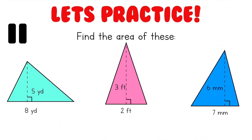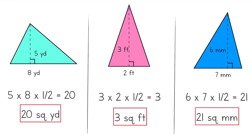Are you ready to try a few on your own? Try your best to solve the area of these three triangles. Don't forget to pause before I give away the answer. Here are the answers I got for these three triangles. I multiplied the base, the height, and one half altogether. Remember, the order in which you multiply doesn't matter — you will get the right answer as long as you multiply the correct numbers. For example, in the first triangle, I did 5 times 8 for the base and the height, and then multiplied by one half, because a triangle is always half the area of its corresponding rectangle. Then I attached the proper square units, just like with the rectangles and squares.